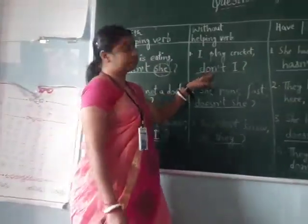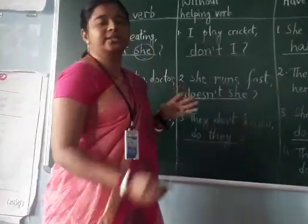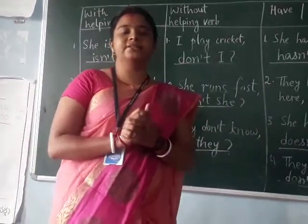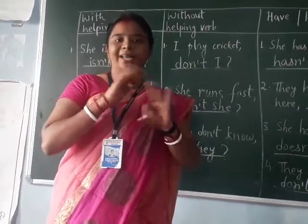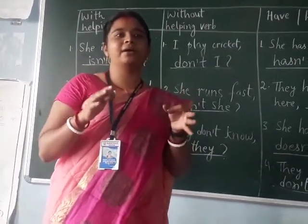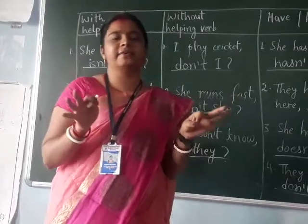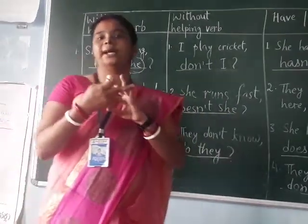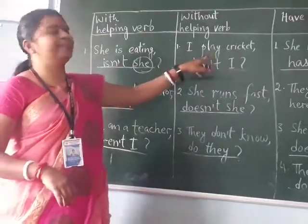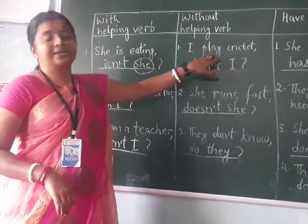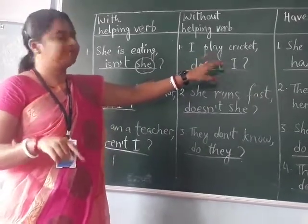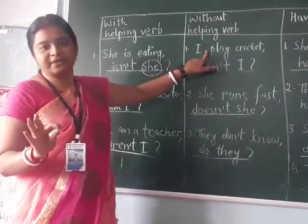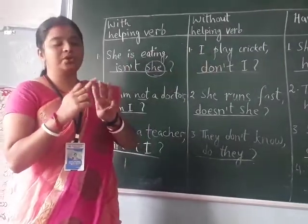Coming to the next question. Sometimes in the question there is no helping word. In those type of sentences, we have three options. If there is no helping verb like is, am, are, was, were, can, may — nothing is given — then we will go with either do, does, or did. The first question is 'I play cricket.' As the sentence is positive, we are going to give a negative question tag. In case the helping verb is not given, we have three options: do, does, and did.